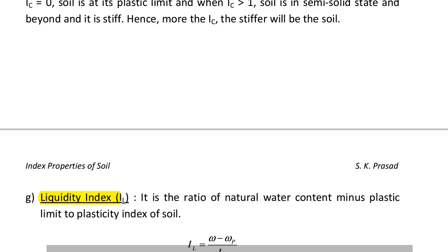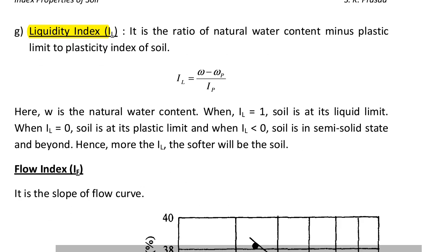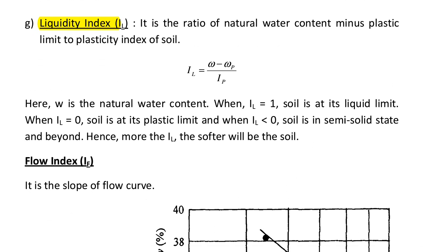Next we are going to see the definition of liquidity index IL. Liquidity index is the ratio of natural water content minus plastic limit to the plasticity index of the soil. Liquidity index IL = (W minus WP) divided by IP, where W is the natural water content.